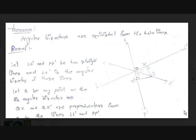Hi guys, KJ here with another video on Easy Math. Today we are going to learn about the equations of angular bisectors of two straight lines.